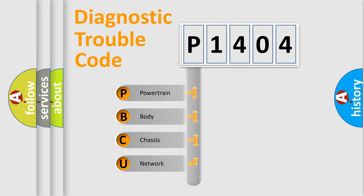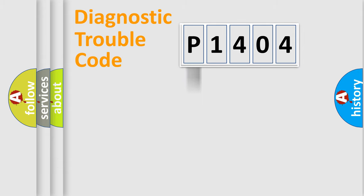We divide the electric system of automobile into four basic units: Powertrain, Body, Chassis, and Network. This distribution is defined in the first character code.